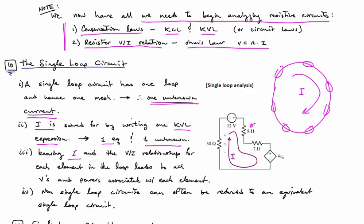For example, with this 8 ohm resistor, if we found that I was 1 amp, then we could compute that the voltage across that resistor was 1 amp times 8 ohms, or 8 volts.